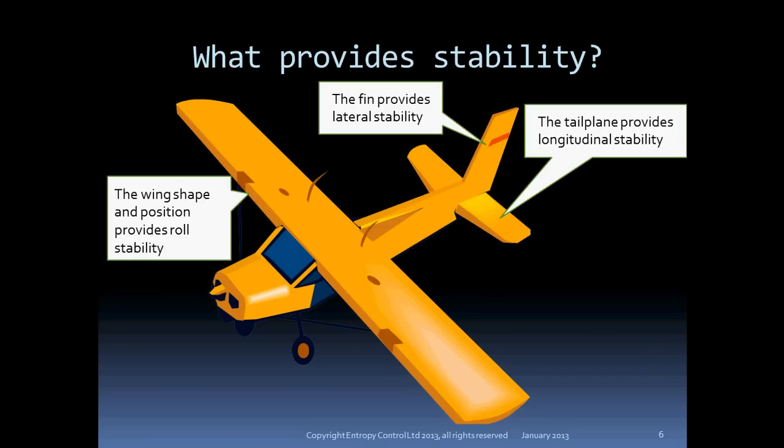So what provides stability to the aircraft? The most straightforward component of stability is the fin, which provides stability in yaw. The fin acts much as the feathers do on an arrow. As long as the CG is well forward of the central lateral pressure, the aircraft will be stable in yaw and will fly straight.